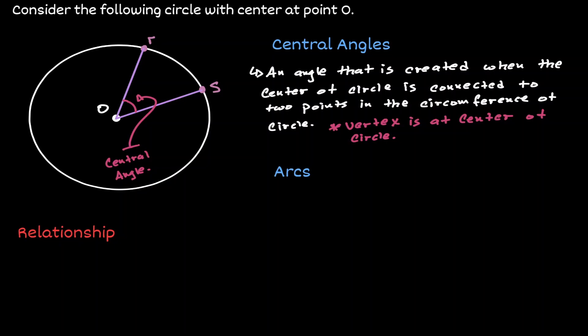The arc that is created right in front of the central angle is what we refer to as the minor arc.